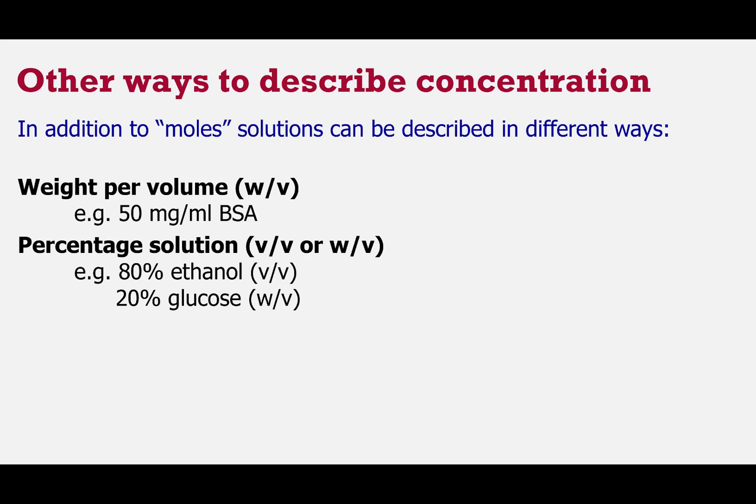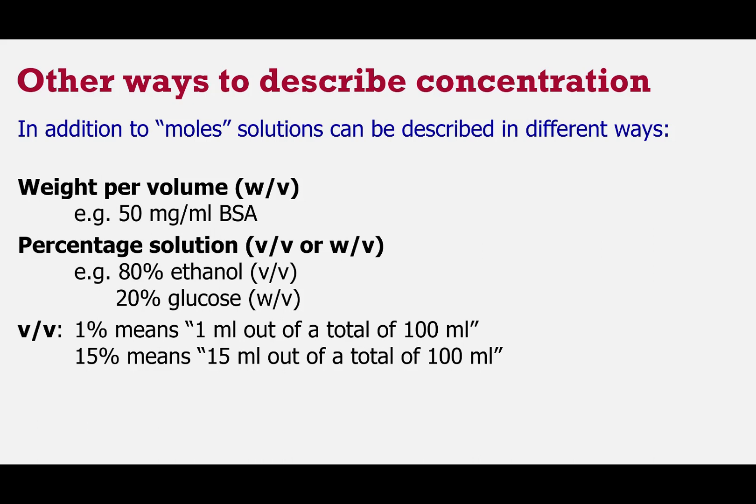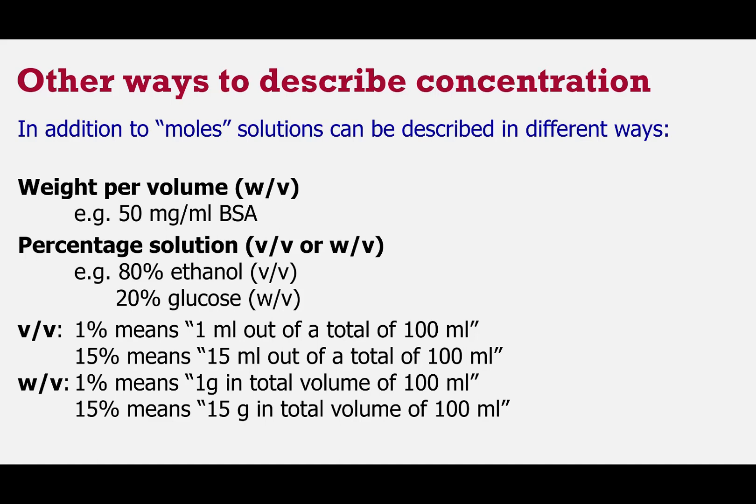Now in terms of those units, V for V, 1% would mean 1 milliliter out of our total of 100 milliliters would be our particular substance. So the rest of it essentially would normally be water. So it would be 1 milliliter of our substance in 99 milliliters of water would be a 1% solution, and similarly a 15% solution would mean 15 mils out of our 100 mils was the particular substance, and the rest would likely be water. In terms of weight per volume, 1% means 1 gram in total volume of 100 mils, and 15% would mean 15 grams in a total volume of 100 mils. So that just sets out some of the potential things that we could be thinking about in terms of ways of describing the concentration of a solution.